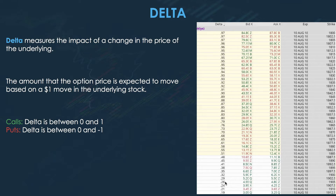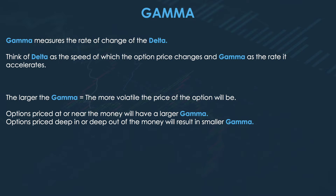Next up is Gamma. Gamma measures the rate of change of the Delta. If you think of Delta as the speed at which the option price changes, then Gamma is the rate at which it accelerates. The larger the Gamma, the more volatile the price of the option will be.